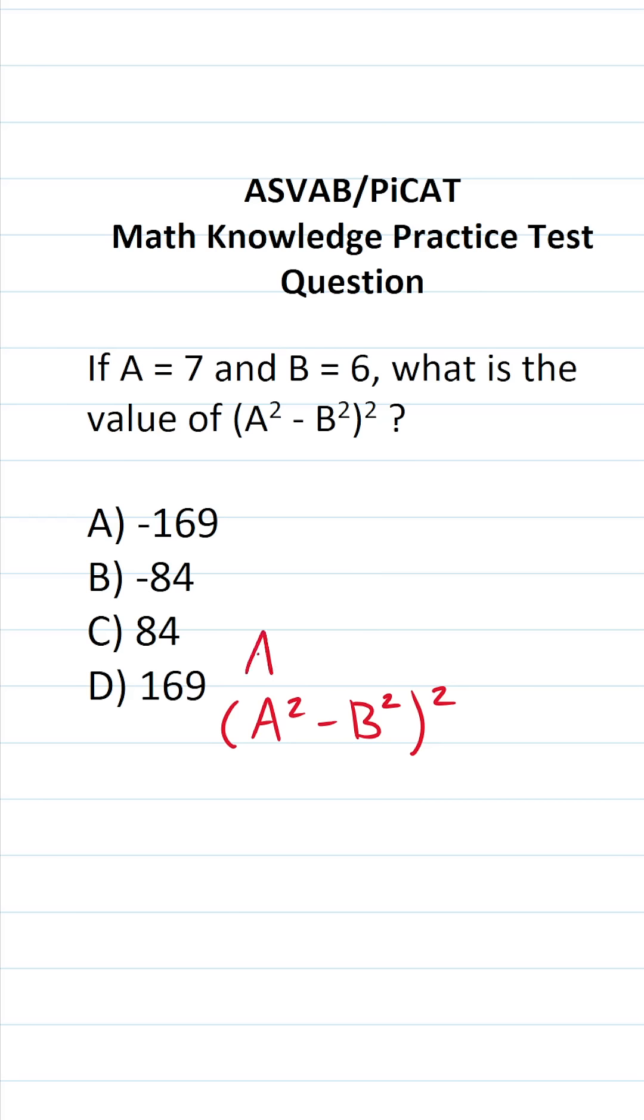In this case, we want to evaluate this expression when A equals 7 and B equals 6. In other words, we're going to plug in 7 for A and 6 for B and evaluate this expression accordingly. This becomes 7 squared minus 6 squared all squared.